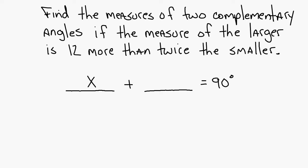2x plus 12. So 2x, and then 12 more than that would be plus 12. So there's your setup. One angle plus another angle has to equal 90 because they are complementary. So then you can combine like terms. So 3x plus 12 equals 90.